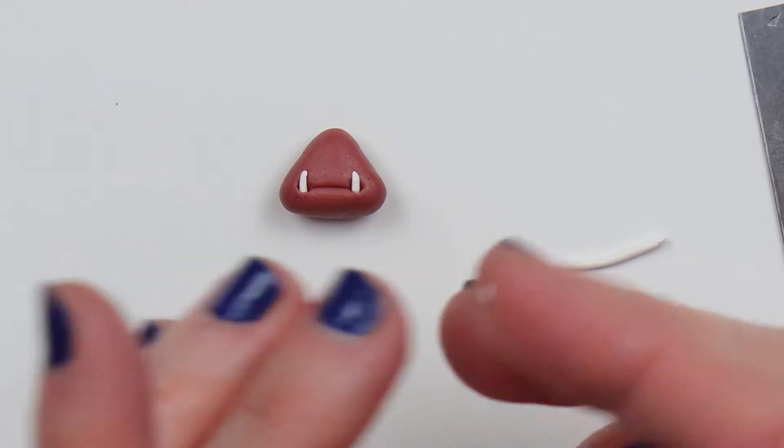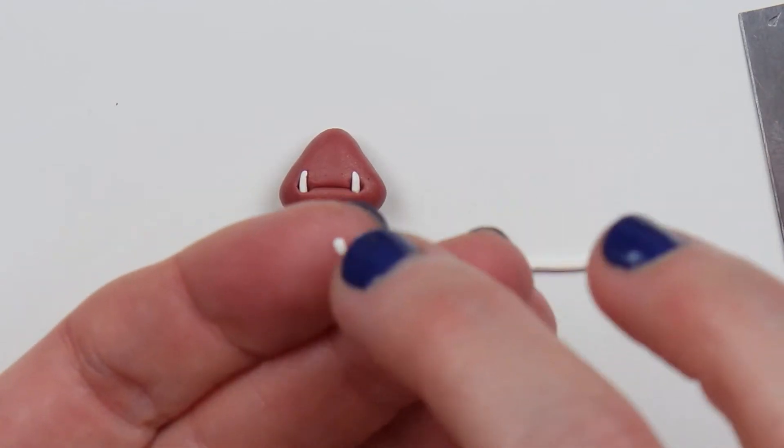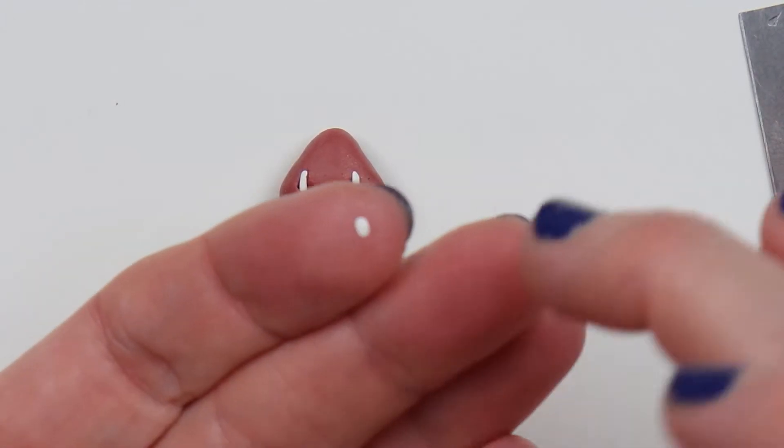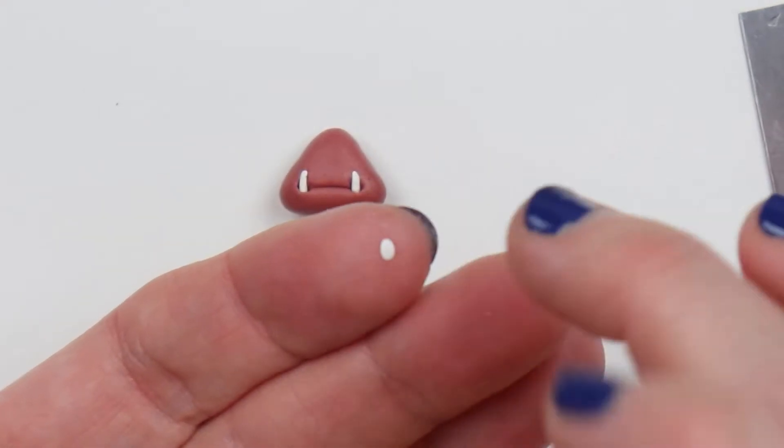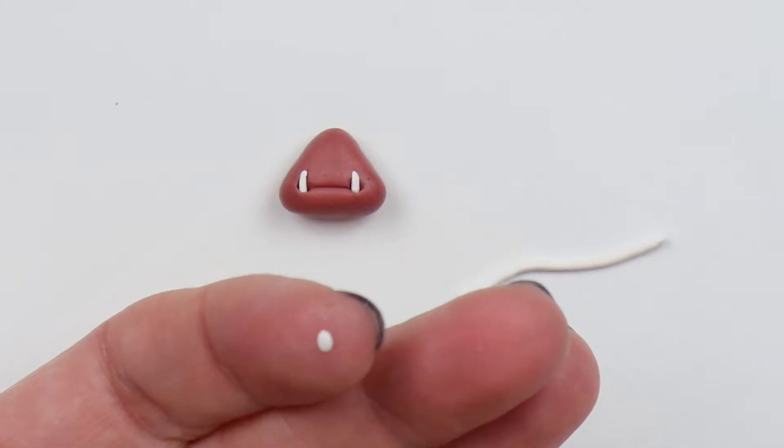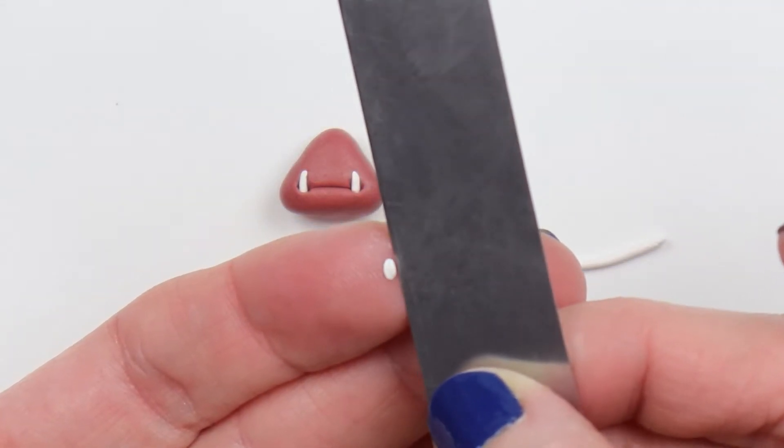Because the clay is super small, it will get very warm very fast, so it might become a little sticky. If this happens, you could always cut off another piece and begin again. But generally, you just want to work as fast as you can. If it sticks to your fingers, you can use your tissue blade and gently remove it.